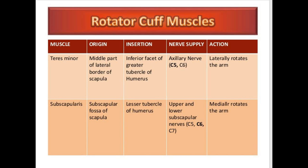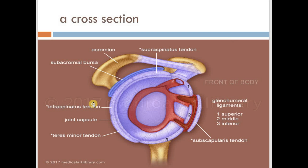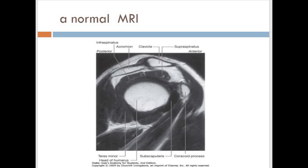Now we will see the cross section. In the cross section, you can see the supraspinatus tendon, infraspinatus tendon, teres minor tendon, and the subscapularis tendon. This is a normal MRI showing all the tendons.